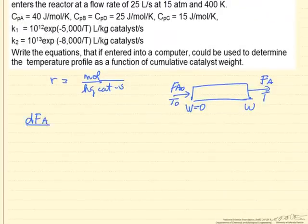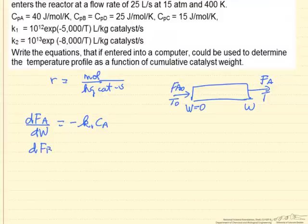The molar flow rate of A with respect to the catalyst weight, the first order reaction, rate constant times the concentration. The molar flow rate of B now is involved, since B is involved in both reactions, a plus sign for the first reaction since we form B, a minus sign because we use up B, and then likewise for components C and D. So here are our four mass balances.